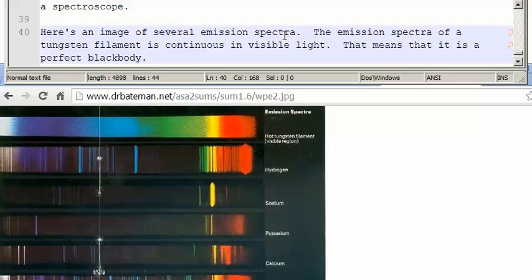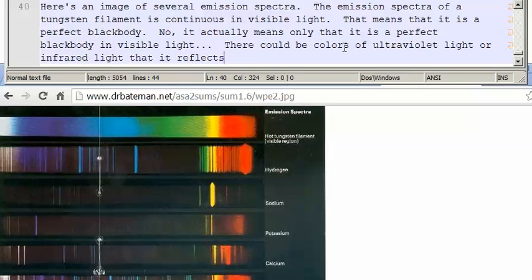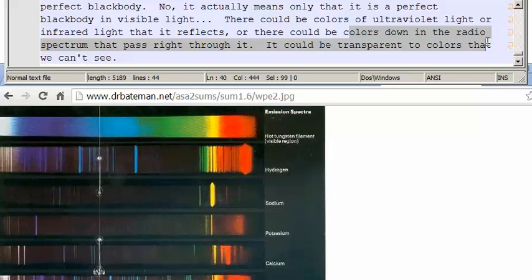You can see visible light spectrum of most gases by pumping a bunch of electricity through it and looking at it through something called a spectroscope. Here's an image of several emission spectra. The emission spectra of a tungsten filament is continuous in visible light. That means it is a perfect black body. No, it actually means only that it is a perfect black body in visible light. There could be colors of ultraviolet light or infrared light that it reflects. And there could be colors down into the radio spectrum that pass right through it.